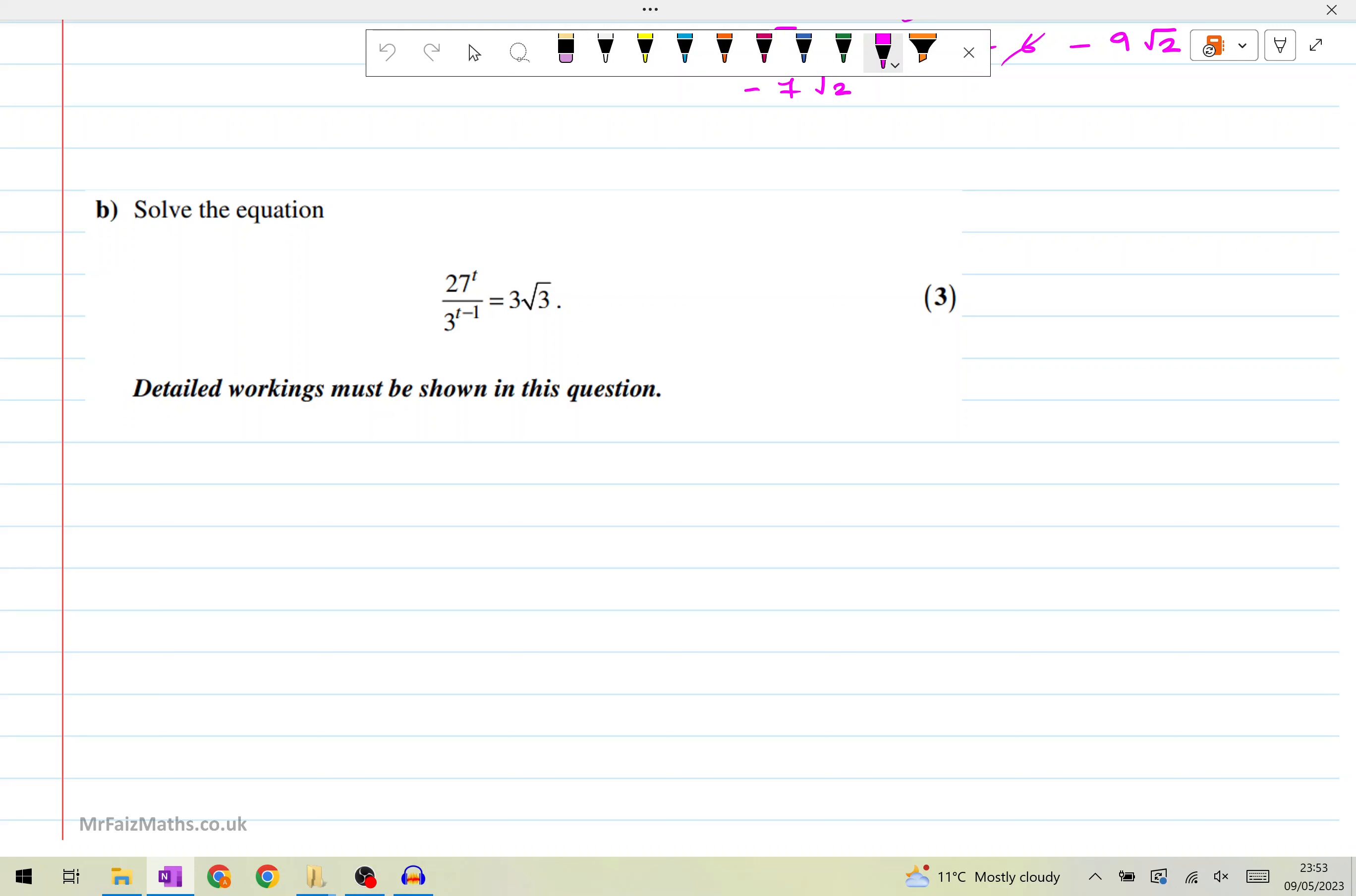So the 27 here can be written as three to the power three. So what I'm first going to do is to rewrite the 27 as three cubed to the power of t. And I think it would actually make sense to multiply this whole thing by three to the power t minus one. So kind of bring that three to the power t minus one to the other side. And then three times the square root of three, square root of three is the same as three to the power half. So I'll write this as three to the power t minus one times three. So that's that three there. And the square root of three, I'll write that as times three to the power one over two.